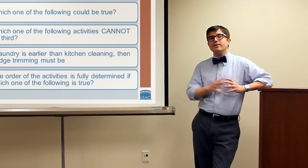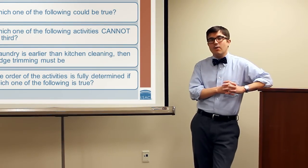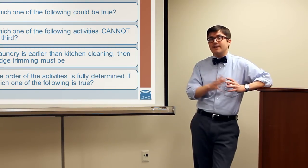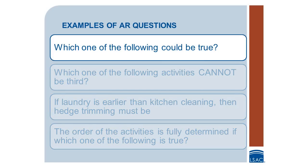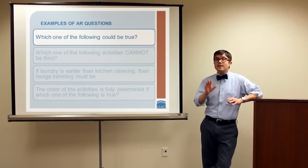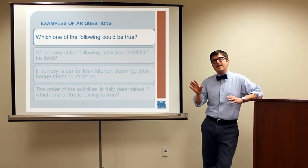Let's look at some particular examples of Analytical Reasoning questions. While I can't give you a complete list of the kinds of questions we ask, I can highlight some notable examples. First: which one of the following could be true? Every AR question, in some sense, is about what can be true, what must be true, and what cannot be true, given the scenario. Sometimes we'll ask exactly that. Sometimes we will ask this type of question but put it in terminology specific to the scenario.